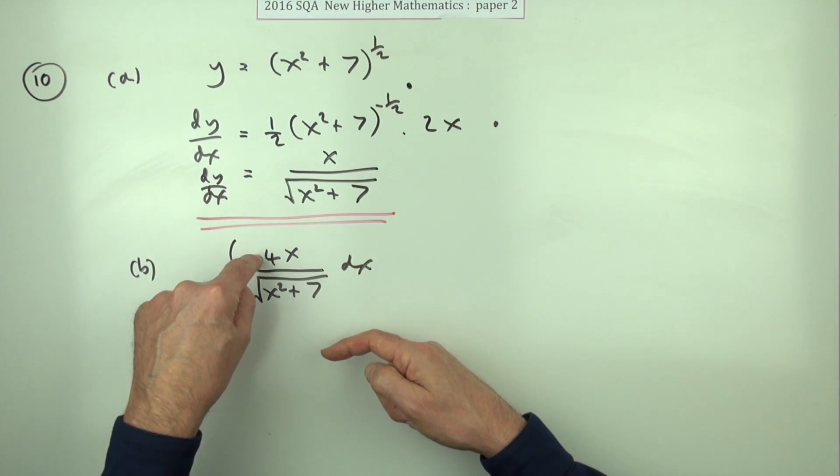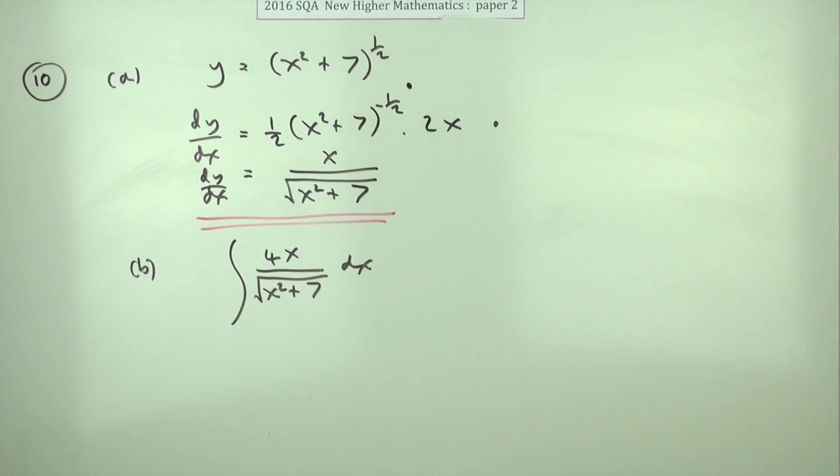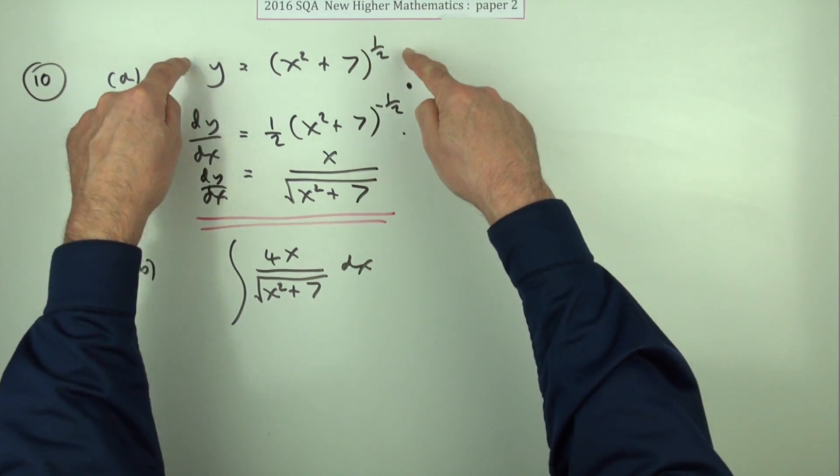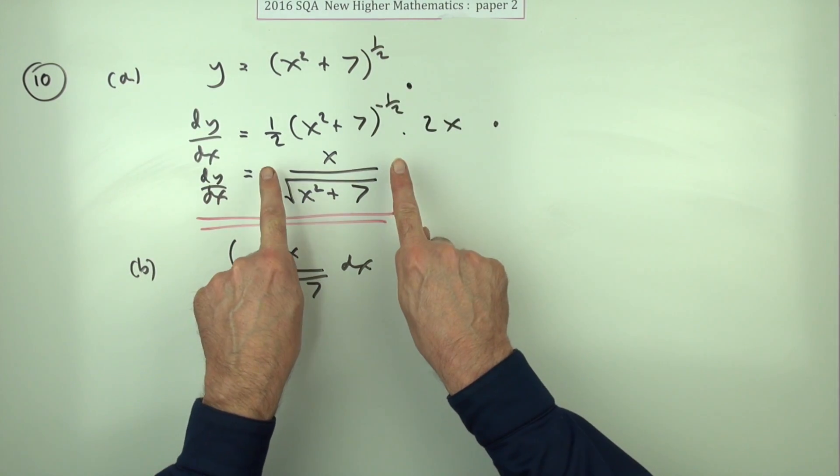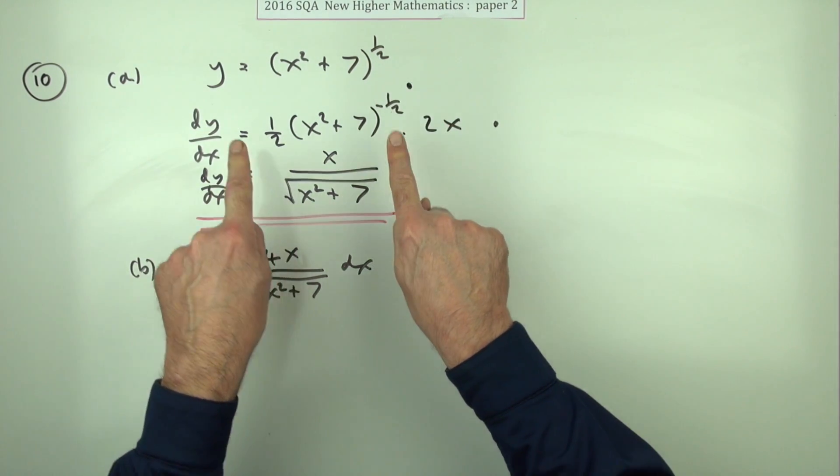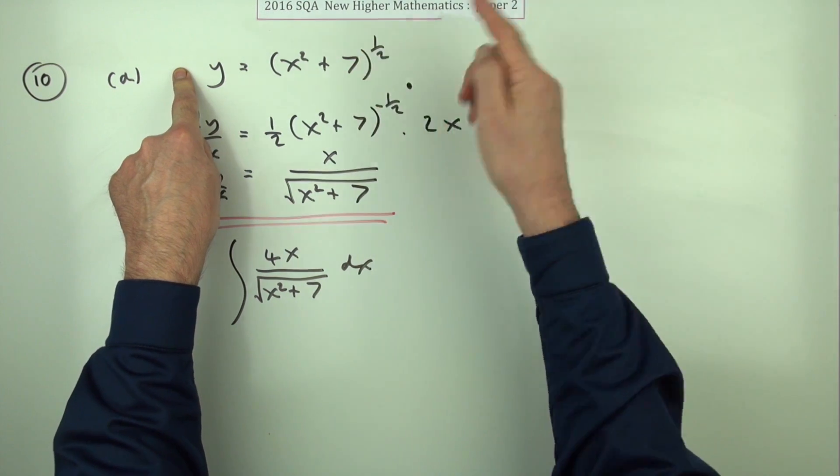The only difference is this is four times that. Remember, you differentiate it to get this, so if you were to integrate this, it would go back to that, plus a constant.